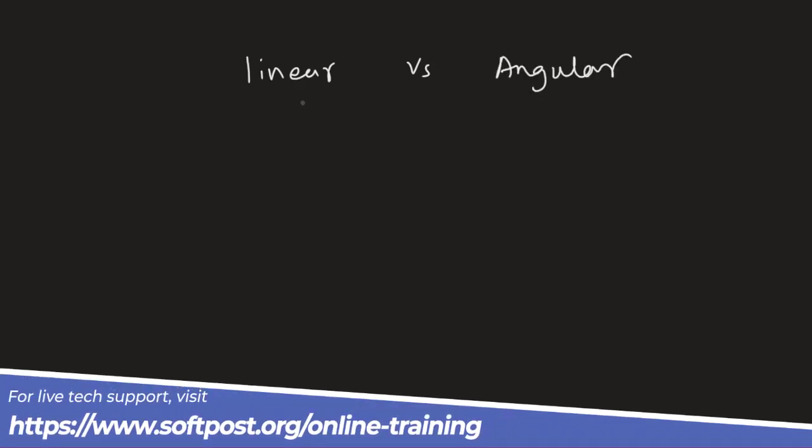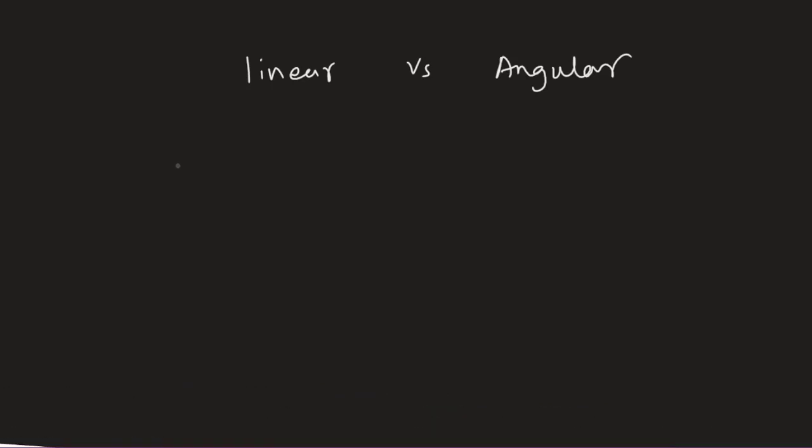You all know that linear velocity is simple. Object moves from point A to point B in a straight line. It is called linear motion.